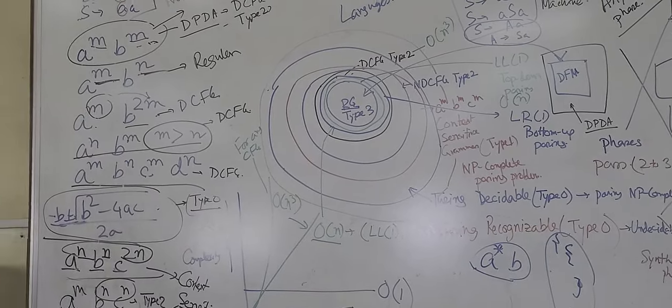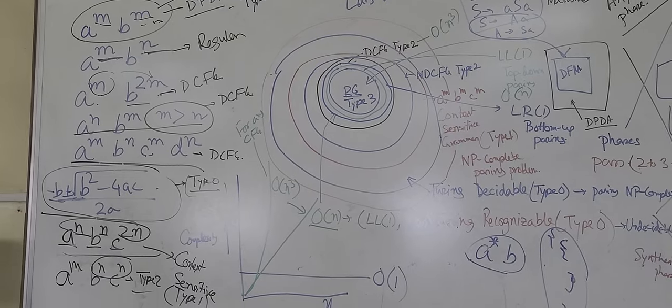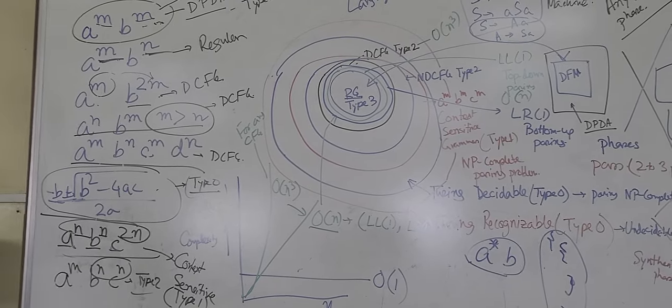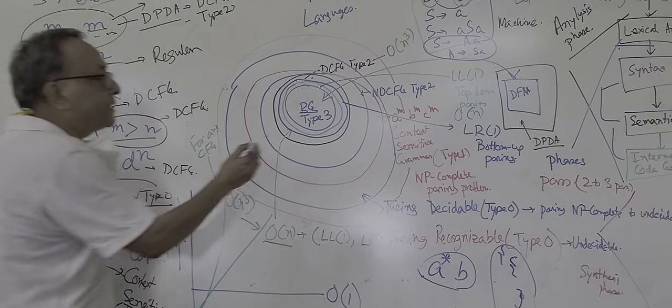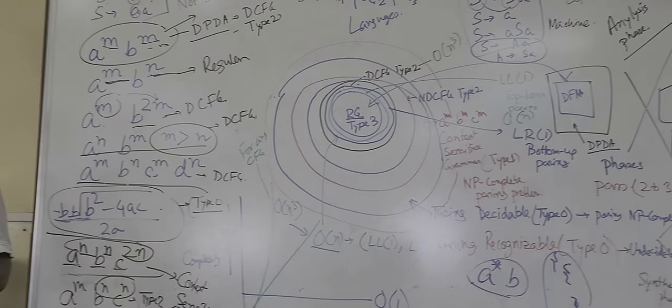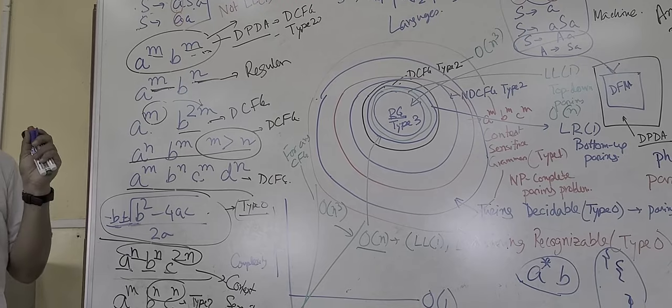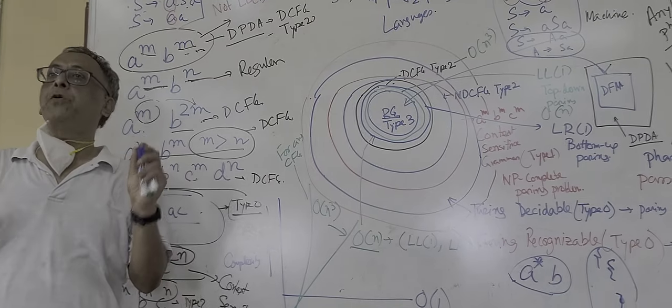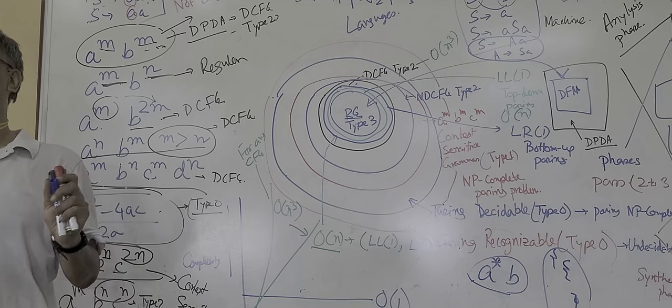But not all this grammar, deterministic context-free grammar cannot be parsed easily. Only a very small subset, that is LL1 parsing, that can be done in O(n). In yesterday's class I taught how to detect an LL1 grammar.